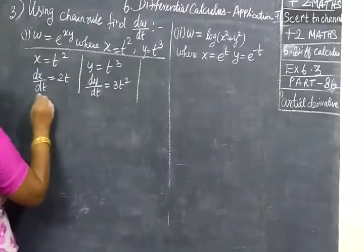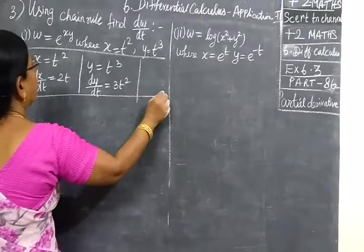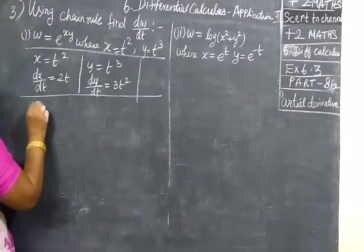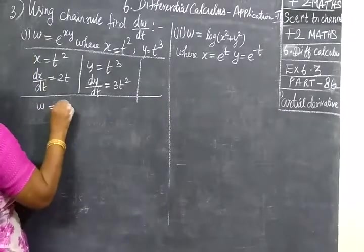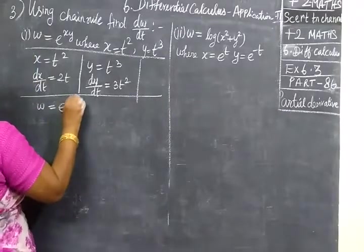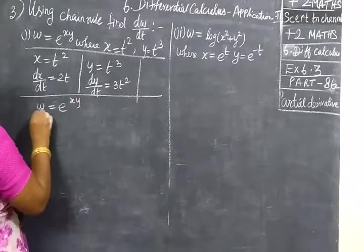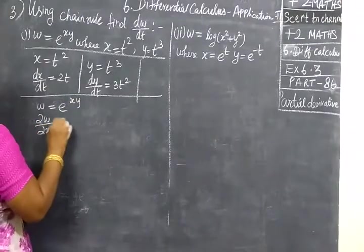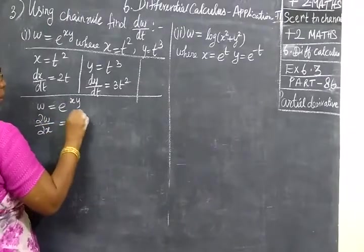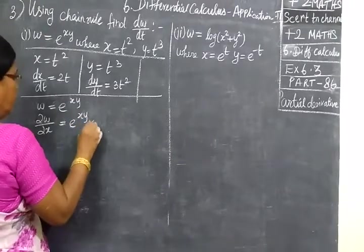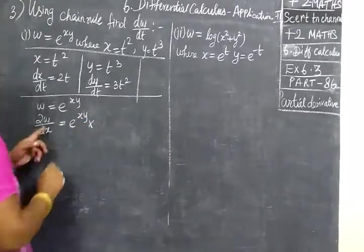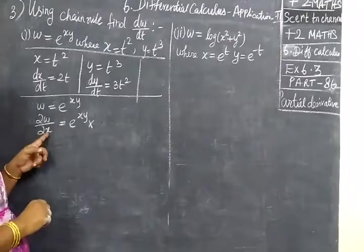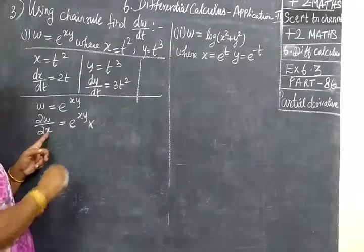Next, you find w equal to e power xy. Find ∂w by ∂x equal to e power xy, where we are partially differentiating w with respect to x alone.